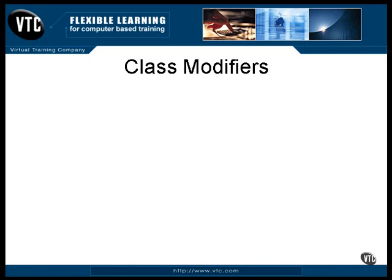Those are the modifiers for defining classes. You can use many of them in combinations, but some of them you can't. For example, a class can't be both public and protected, but a class can be strictfp, final, and public all at the same time. Logic will tell you which combinations work together. Besides, if you get it wrong, the compiler will mention it to you and give you the opportunity to make a correction.